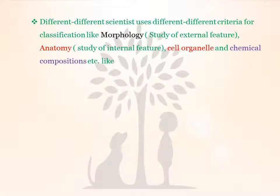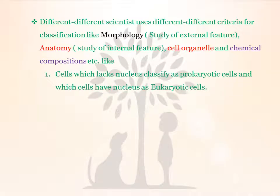Different scientists use different criteria for classification, such as morphology — the study of external characters or features — and anatomy, which is the study of internal features. Other criteria include cell organelles and chemical composition, such as the structure of proteins, plasma membrane structures, and fat composition. Cells without a nucleus are classified as prokaryotic cells, and cells with a nucleus are classified as eukaryotic cells.